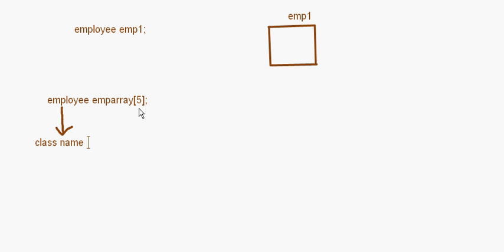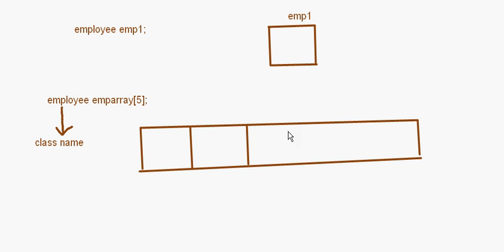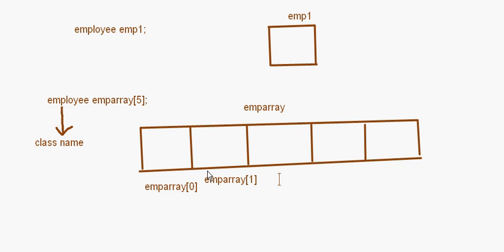So here what happens is this will be your array and it is going to store five objects: the first, second, third, fourth, and fifth object. The name of the array is mp_array. Array indexing starts from 0, so this will be mp_array[0], mp_array[1], mp_array[2], mp_array[3], and mp_array[4]. So here I have got space for storing the details of five employees.